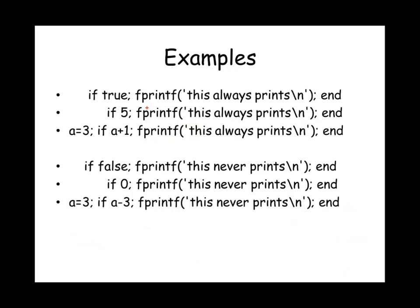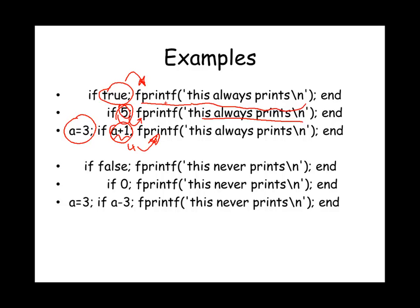In the first three examples shown here, the condition of the if statement always evaluates to true, so MATLAB will go inside the if statement and print 'this always prints'. When you have a number instead of true or false, anything that is not 0 will evaluate to true, and anything that is 0 will be considered false. So 'if 5' will be true. In the third example, we have a variable where the if condition contains a plus 1, so that will be evaluated to 3 plus 1, giving us 4 — again a true expression, and MATLAB will go inside this if statement.